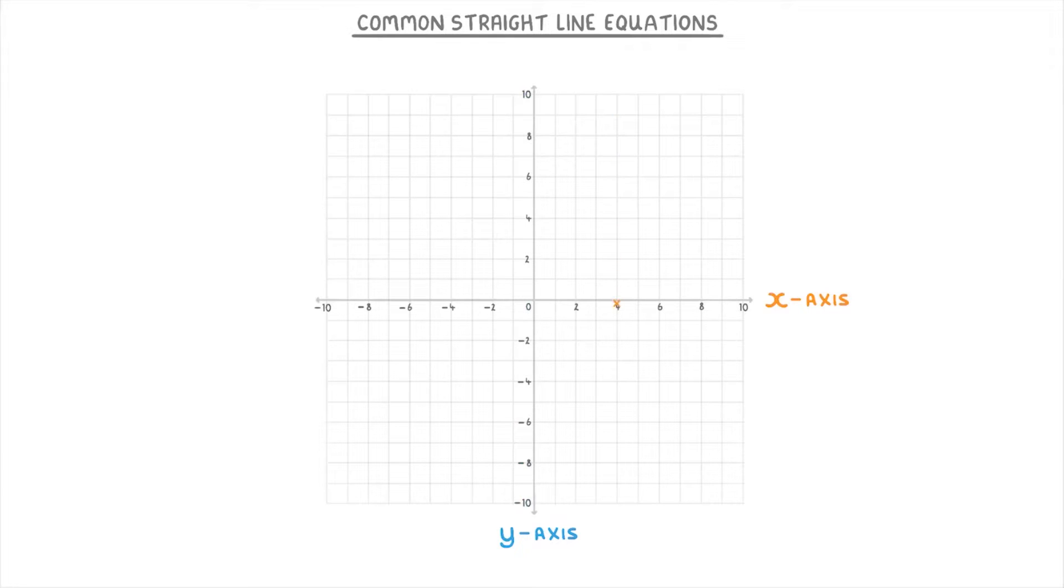Now, because this point here is 4 on the x-axis, all of these points will also have an x value of 4. And so if we join them all up, we're going to get the line x equals 4. Because x is 4 for all of them, regardless of what the y value is.